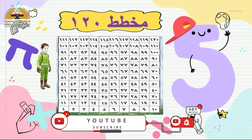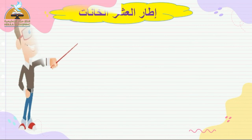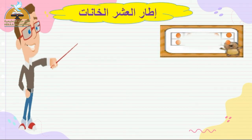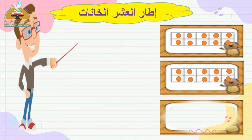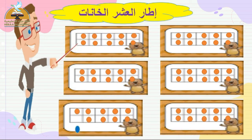يلا بينا نشوف مخطط المائة وعشرون. بيبدأ من واحد إلى مائة وعشرون، بيبدأ من جهة اليسار من أسفل. هنضع دائرة على عدد الأيام اللي ذهبنا فيها للمدرسة وهم ستون يومًا. نمثل الستون يومًا في إطار العشر خانات: الستون يعني كام عشرة؟ ستة عشرات! عشرة، عشرون، ثلاثون، أربعون، خمسون، ستون. برافو!